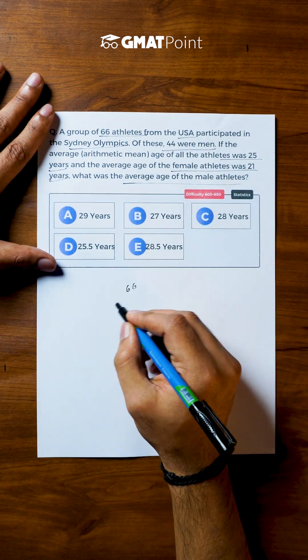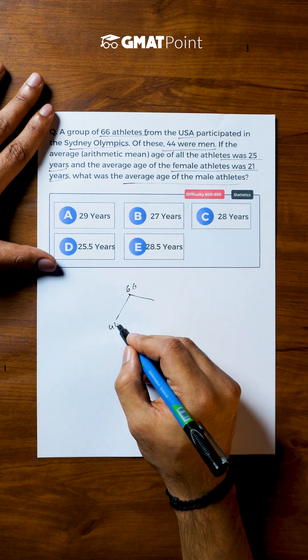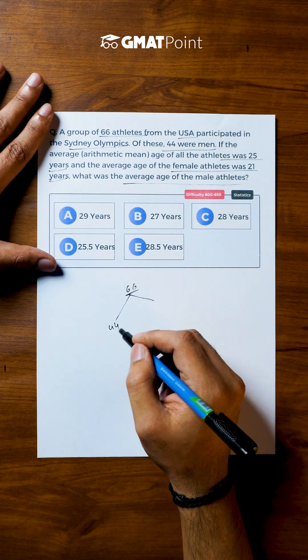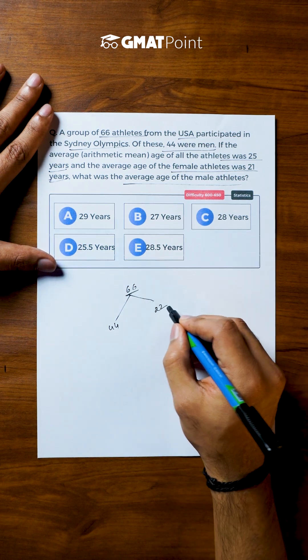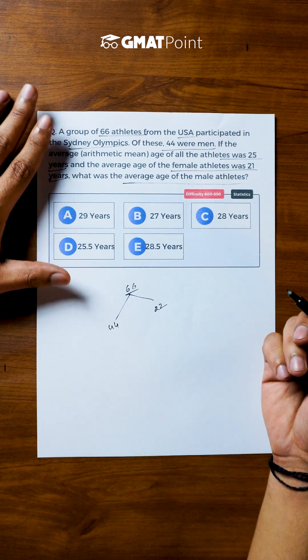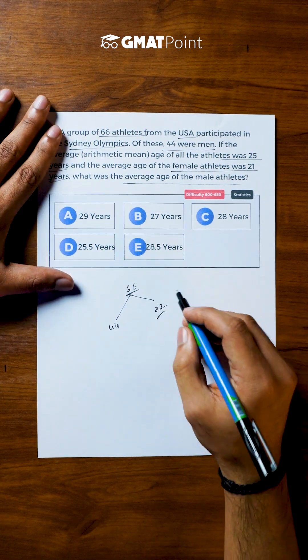So total number of athletes is given to be 66 and we are also told that out of this 66, 44 are men. So the number of women athletes can be calculated as 66 minus 44, which is 22.